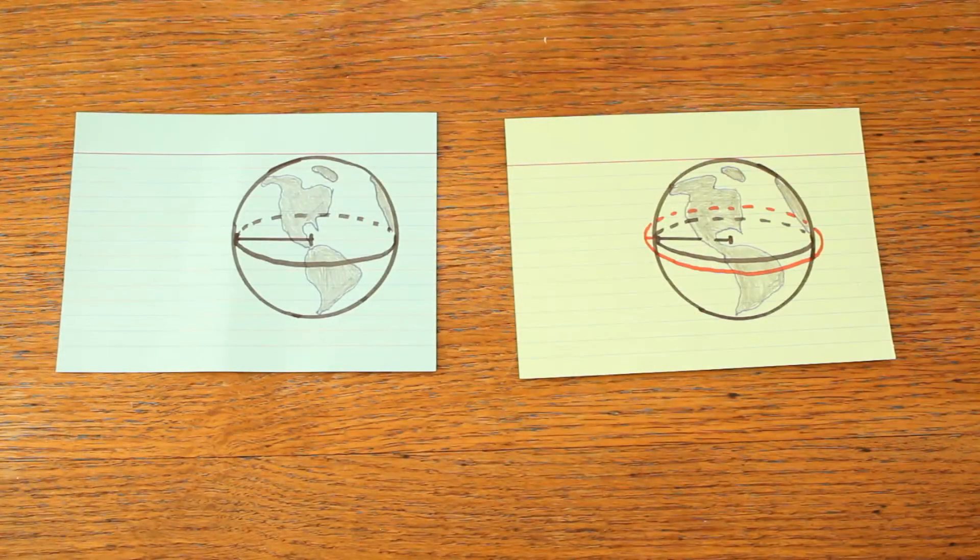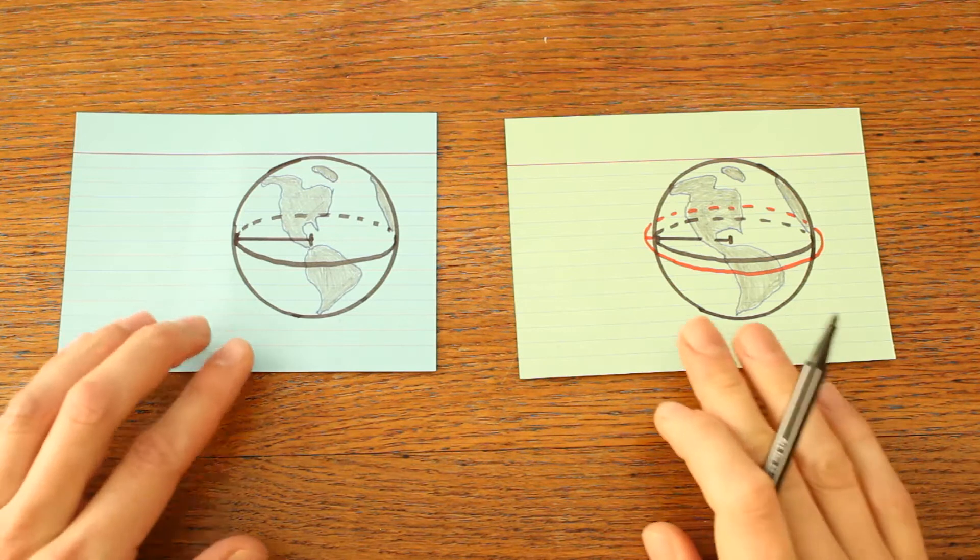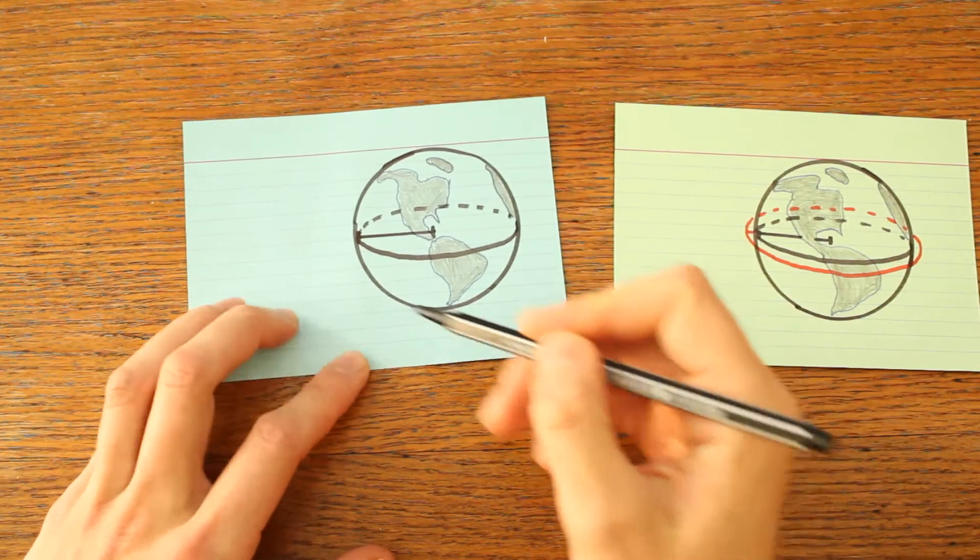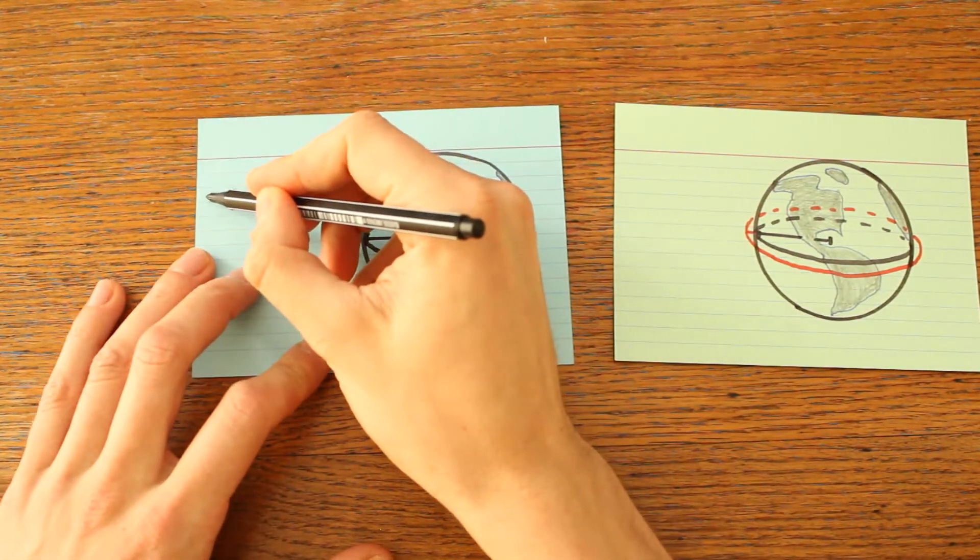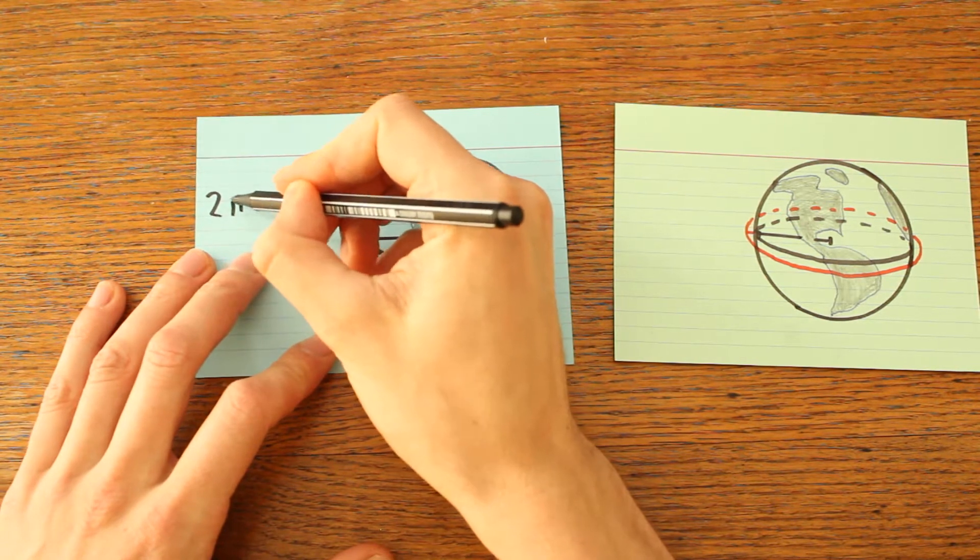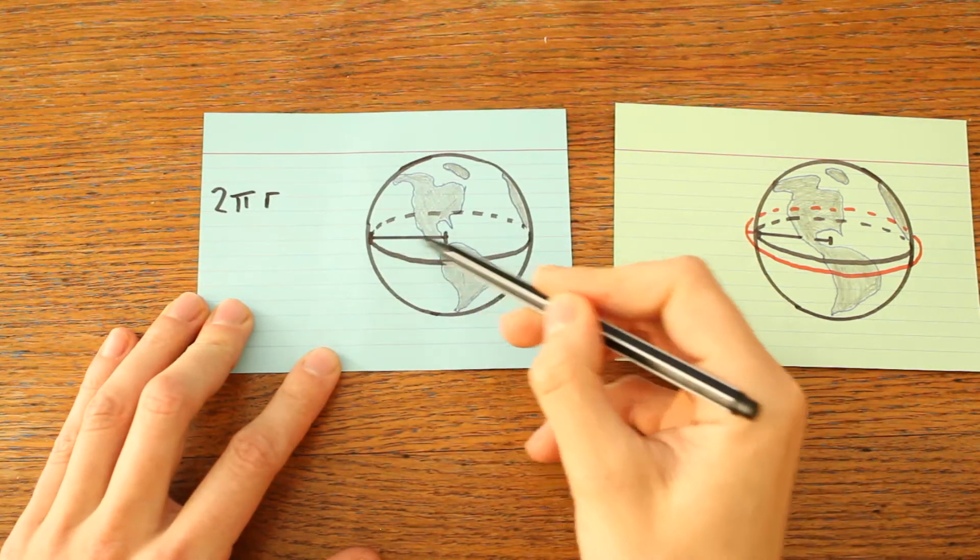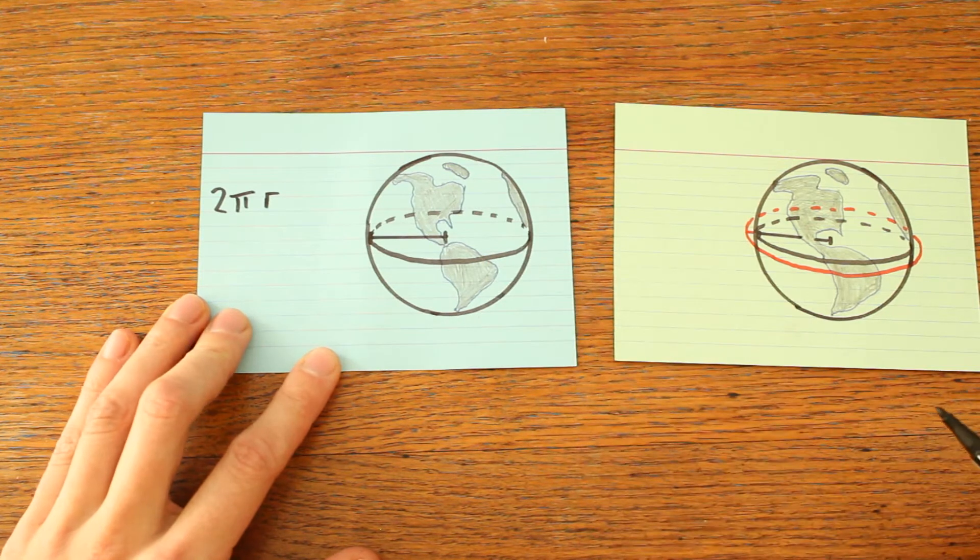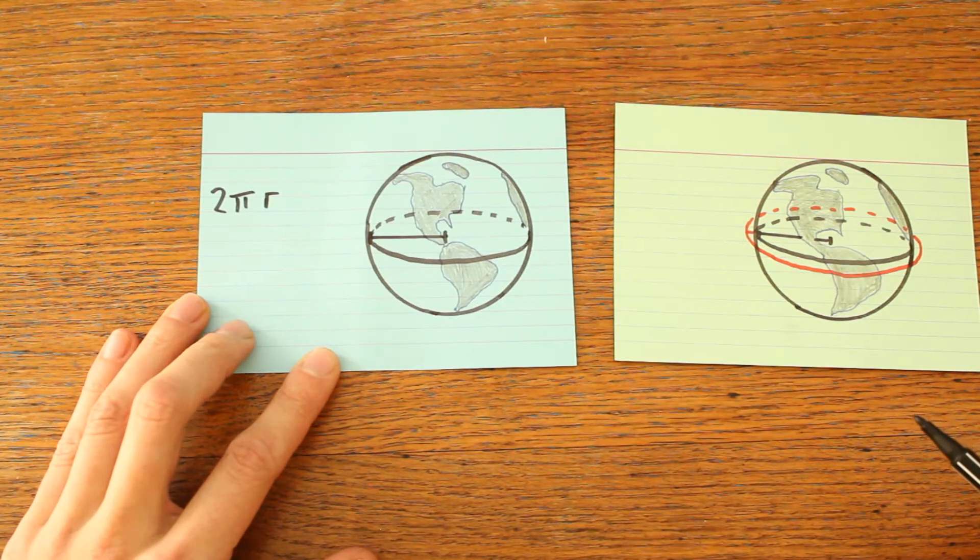But if you look at it actually that's not really true. So what's the first ribbon's length? Well it's a circle and the circumference is 2 times pi times r, where r is the radius, so in this case that's the Earth radius and that's something like 6400 kilometers.